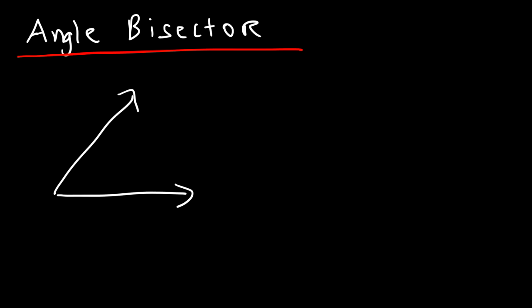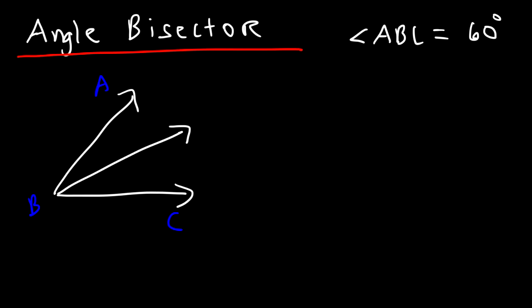Let's say this is angle ABC and angle ABC equals 60 degrees. Now let's create another ray. If ray BD is an angle bisector, that means angle ABD has to be 30 degrees and angle DBC is also 30. If that's the case, then BD is an angle bisector of angle ABC — it splits angle ABC into two congruent angles.